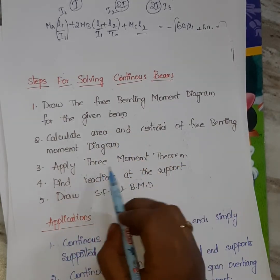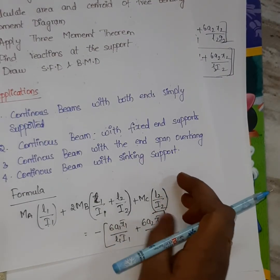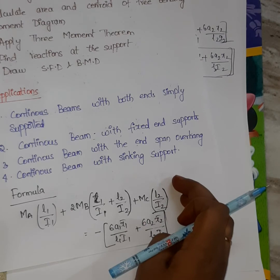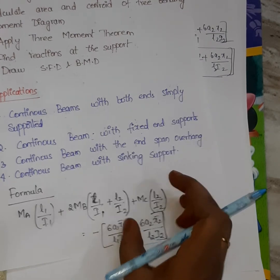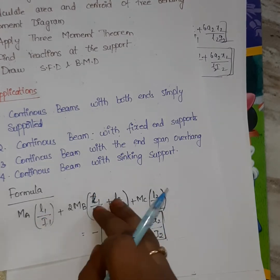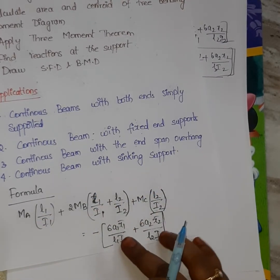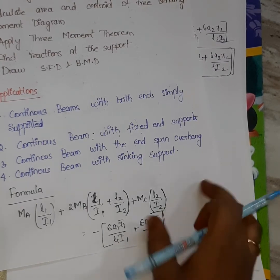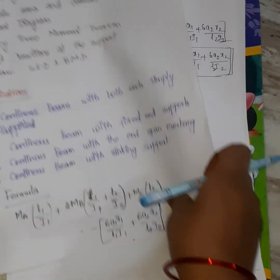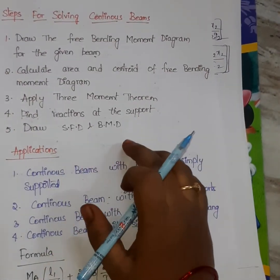The third step is to apply the three-moment theorem. Substitute I1, I2 — the moment of inertia values — into the formula. The fourth step is to find the reactions at each support. The fifth step is to draw the shear force and bending moment diagram.